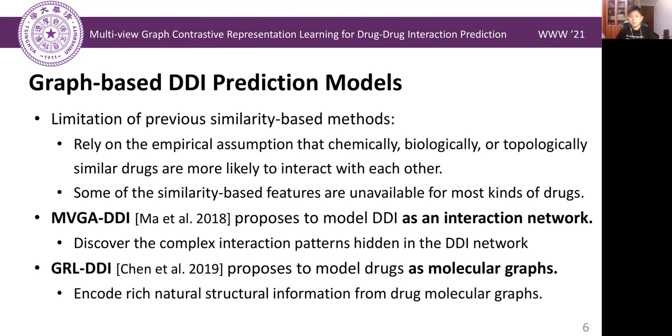Therefore, accompanied with the flourish of graph neural networks, some research works focus on modeling drug-drug interactions with graphs. MVGA-DDI proposes to model DDI as an interaction network, which helps to discover the complex interaction patterns hidden in the DDI network. In more recent work, GRL-DDI proposes to model drugs as molecular graphs, which can encode rich natural structural information from drug molecular graphs.